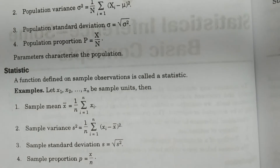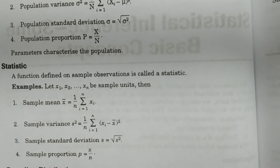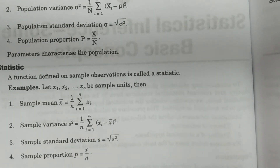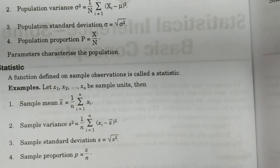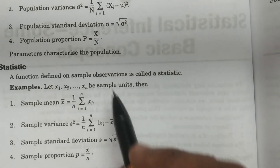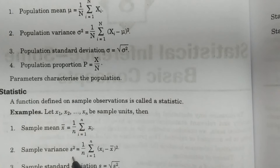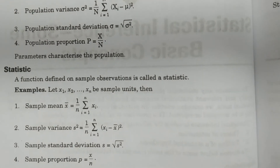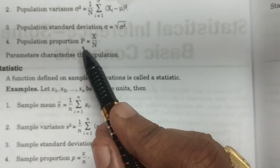Sample standard deviation is s, and sample proportion is small p, which equals x by n. You can easily identify that all population measures are denoted by capital letters, and all sample measures or sample functions are denoted by small letters. Population mean is mu, sample mean is x̄; population variance is sigma square, sample variance is s square; population standard deviation is sigma, sample standard deviation is s; population proportion is capital P, sample proportion is small p; population size is capital N, sample size is small n.